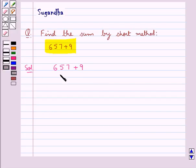That is we need to find 657 plus 9. Now we can write this as 657 plus, we can write 9 as 10 minus 1. So this is equal to 657 plus 10 minus 1.